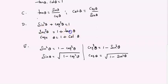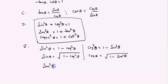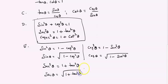Secant squared theta equals 1 plus tan squared theta, so secant theta equals root of (1 plus tan squared theta). Cosecant squared theta equals 1 plus cot squared theta, so cosecant theta equals root of (1 plus cot squared theta). These are the standard relations.